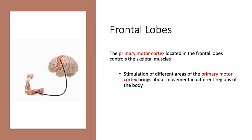Switching from the somatosensory cortex to the primary motor cortex located within the frontal lobes — specifically the precentral gyrus — these areas control skeletal muscles. Stimulation of different areas of the primary motor cortex brings about movement in different regions of the body: stimulation in one area may cause you to lift a finger, while another may cause you to lift your knee. Just as with sensory, the motor cortex on one side of the brain controls the opposite side of the body — damage to the left side produces paralysis on the right.